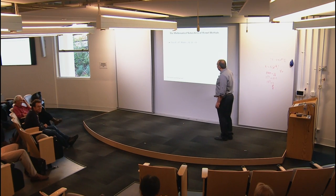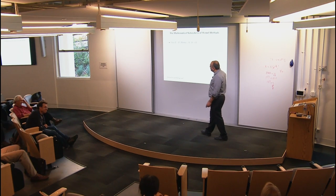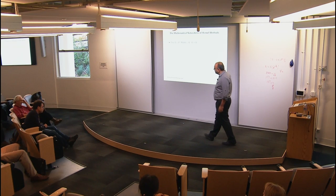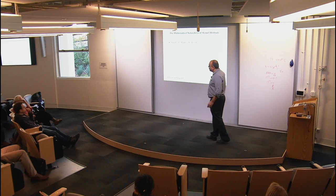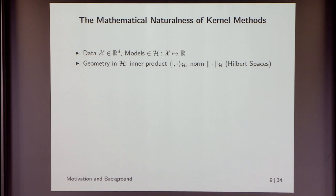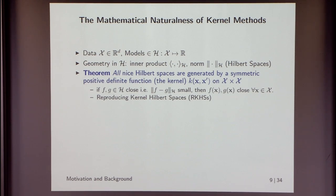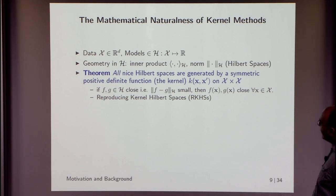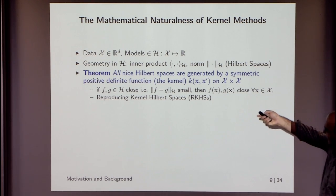Here's my justification for kernels — it's mathematically very natural. We think of data as elements in a vector space and models as elements in a function space. We want to put mathematical structure on this function space — a notion of inner product, an associated norm — and with some technical conditions you get to the notion of a Hilbert space. There's a theorem that all 'nice' Hilbert spaces are generated by a symmetric positive definite function: the kernel on the input space. 'Nice' means if two functions f and g are close in norm, then f(x) and g(x) are also close for all x.